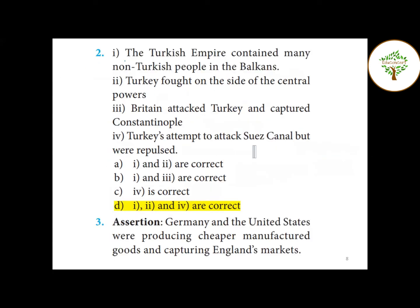Question number two — first statement: the Turkish Empire contained many non-Turkish people in the Balkans — correct. Turkey fought on the side of the central powers — correct. Britain attacked Turkey and captured Constantinople — this is wrong; it was Turkey that captured Constantinople. Turkey's attempt to attack the Suez Canal was repulsed — this is correct. So statements one, two, and four are correct.